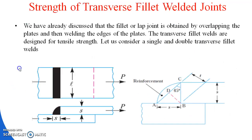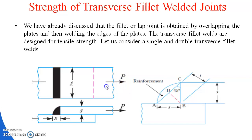Next, we find the strength of the transverse fillet welded joint. The fillet or lap joint is obtained by overlapping the plates and welding the edges. Transverse fillet welds are designed for tensile strength — not shear strength or compressive stress. We consider two conditions: single transverse fillet joint and double transverse fillet joint. In the diagram, L is the length of the weld, P is the tensile strength, and S is the weld thickness.